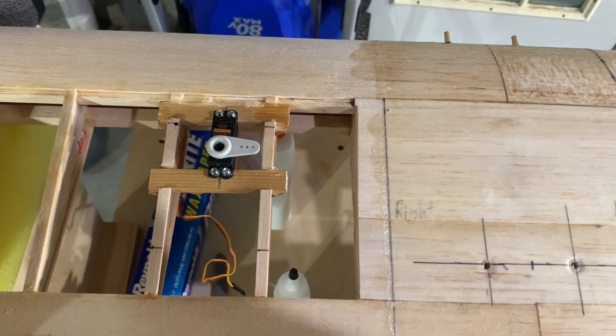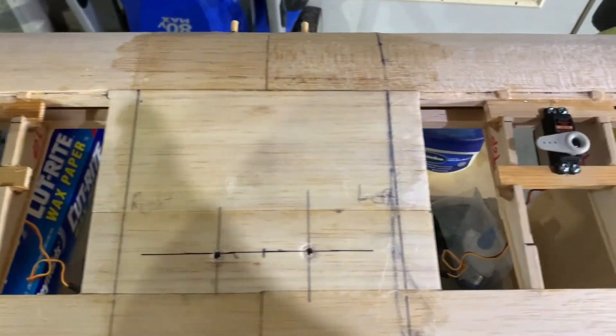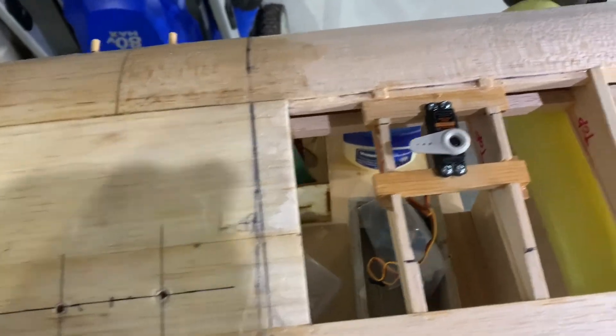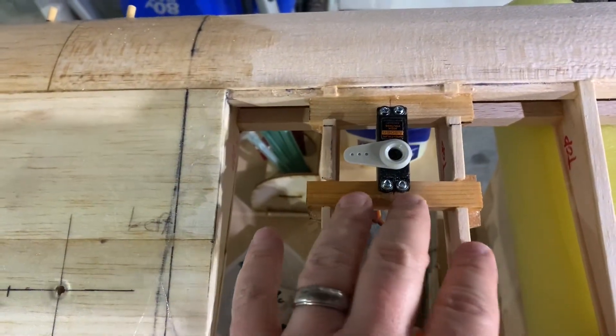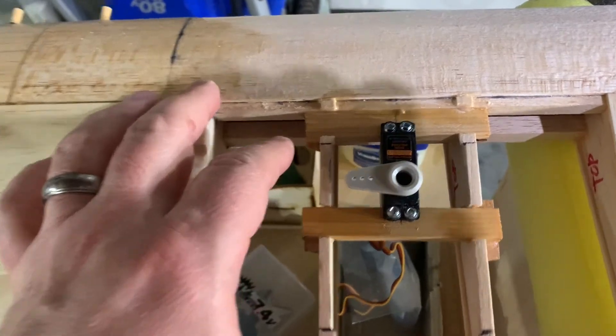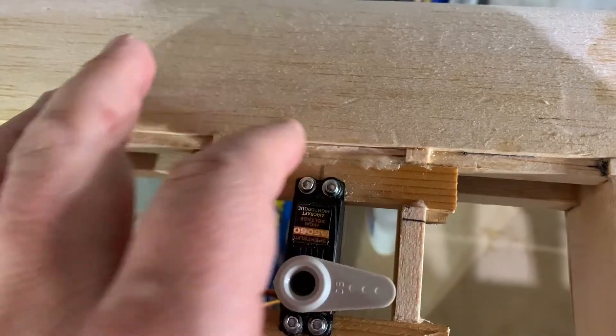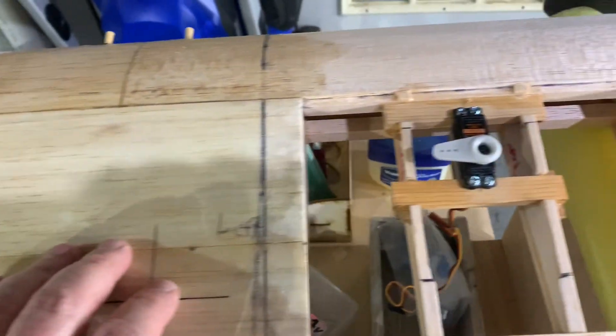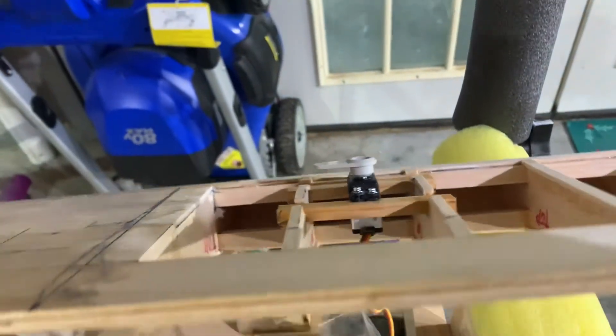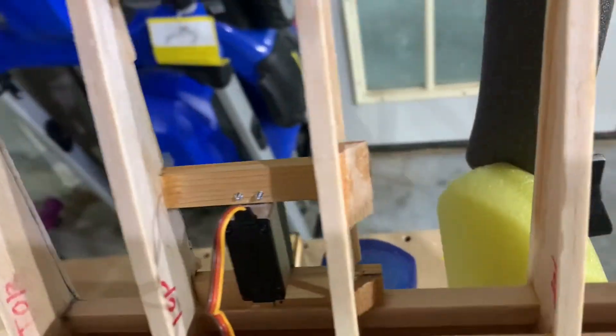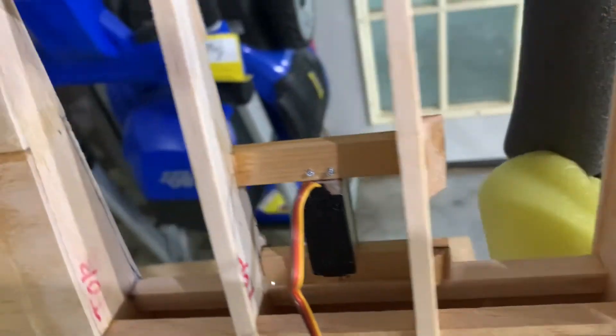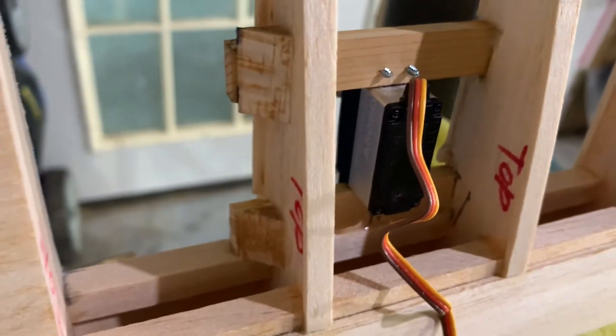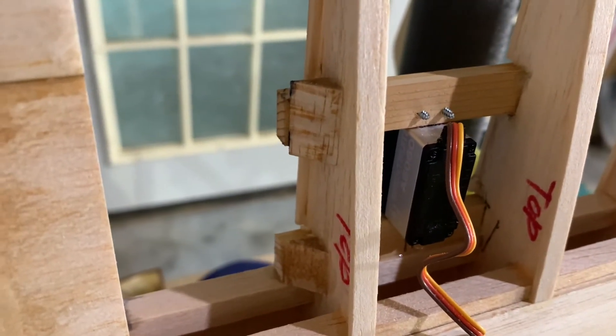As we continue your update here on the installation of the servos in the wing, we've got our spruce installed. And we have it, as you can see, epoxied in place up against the front spar. Not a great job here, but that's okay, we'll take care of that. What I also did to provide a little extra strength is we took some triangular stock, you can see it here, and put it on each of the servo rails on both sides of the wing.